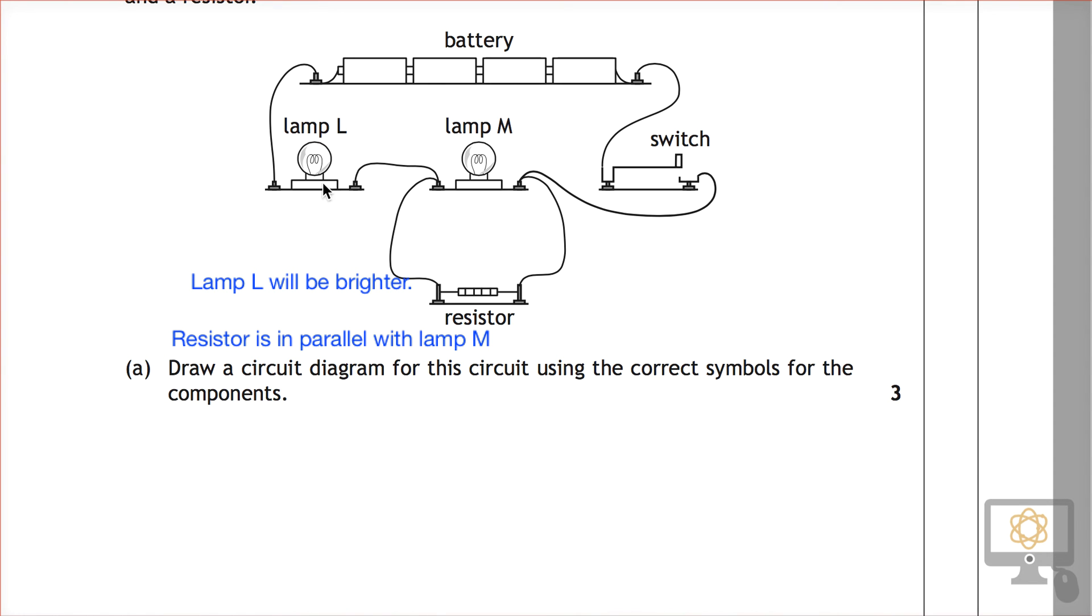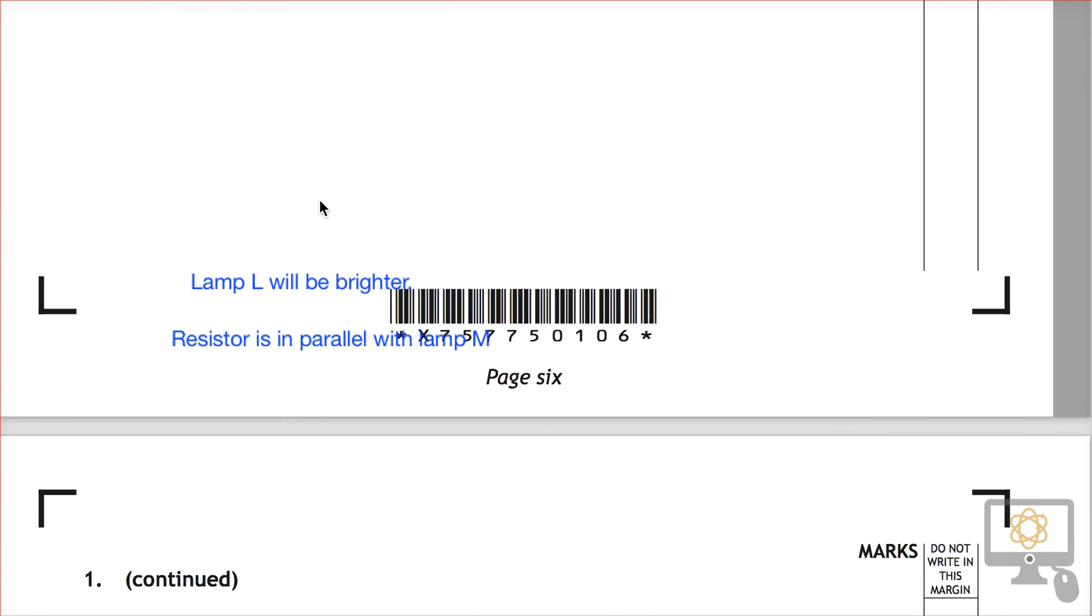All of that current will get here again and all of that current will travel through lamp L. And so therefore, when all of the current is traveling through lamp L, not all of the current is traveling through lamp M. So what we can say is that because the resistor is in parallel with lamp M, lamp M has less current flowing through it than lamp L has.